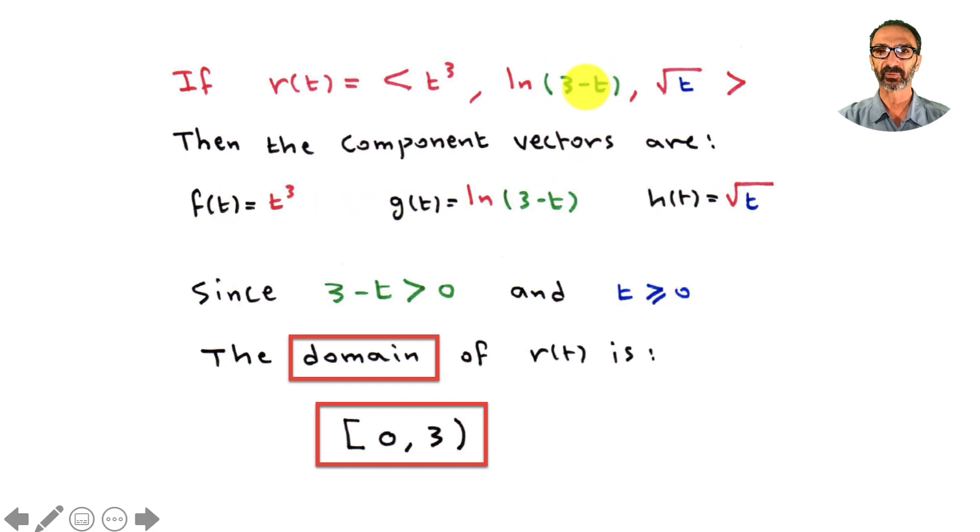Looking at the green part right here, this is the input for ln(3-t). We know that ln has to be greater than zero as a domain, so 3-t has to be greater than zero.